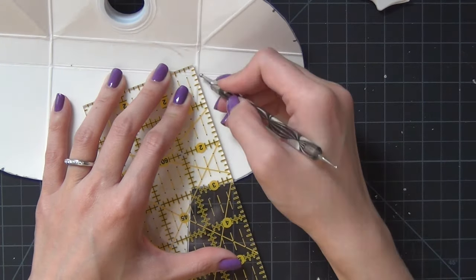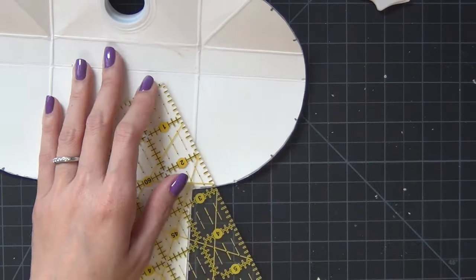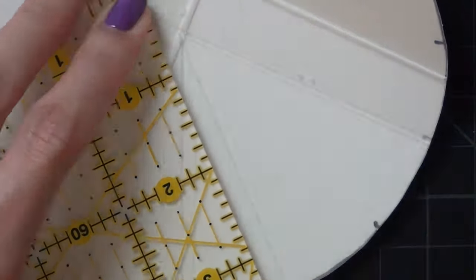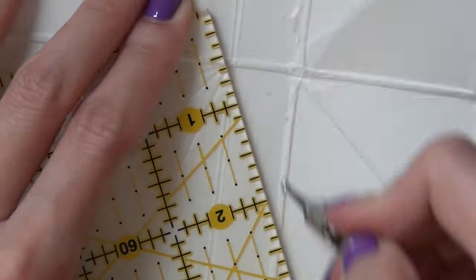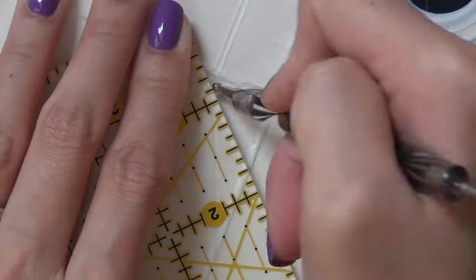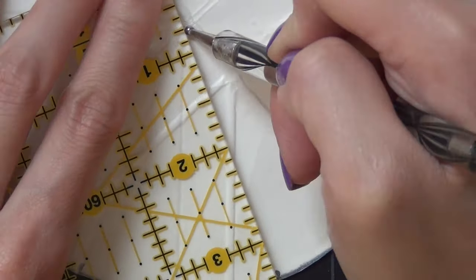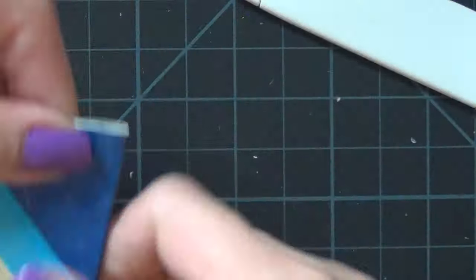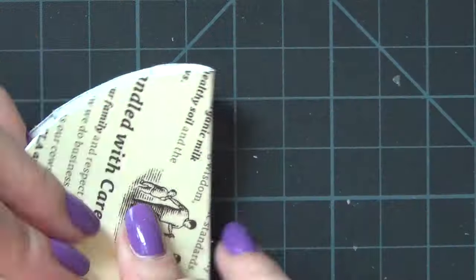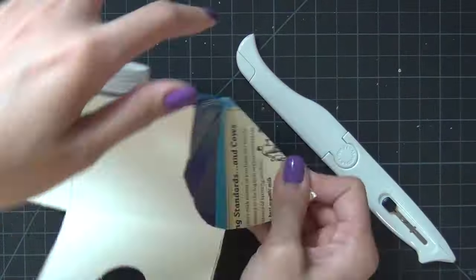After that from the center out I'm just connecting that center point to the little tick marks on the side of that circle. And again after scoring each of these lines make sure you fold it and press it down to have nice crisp lines and then this will give you the accordion folding on the side of your wallet.